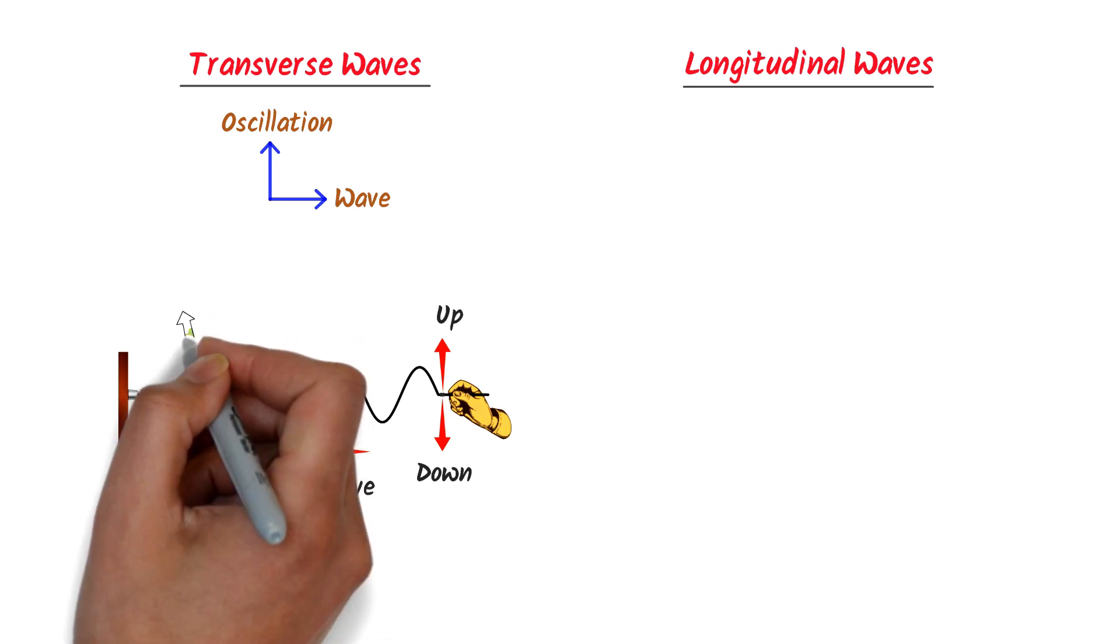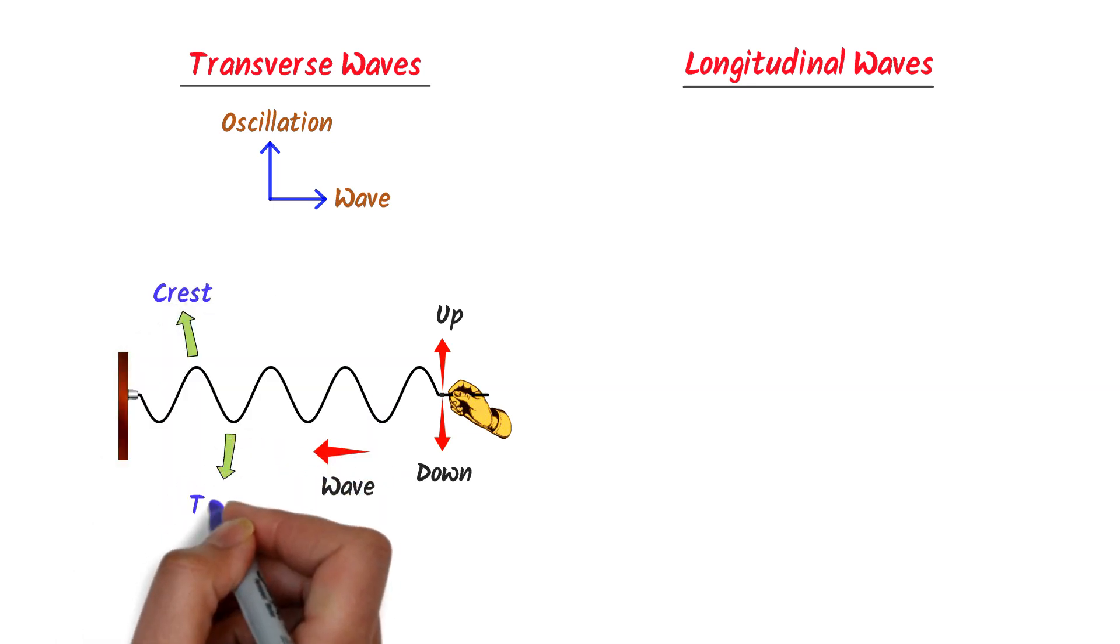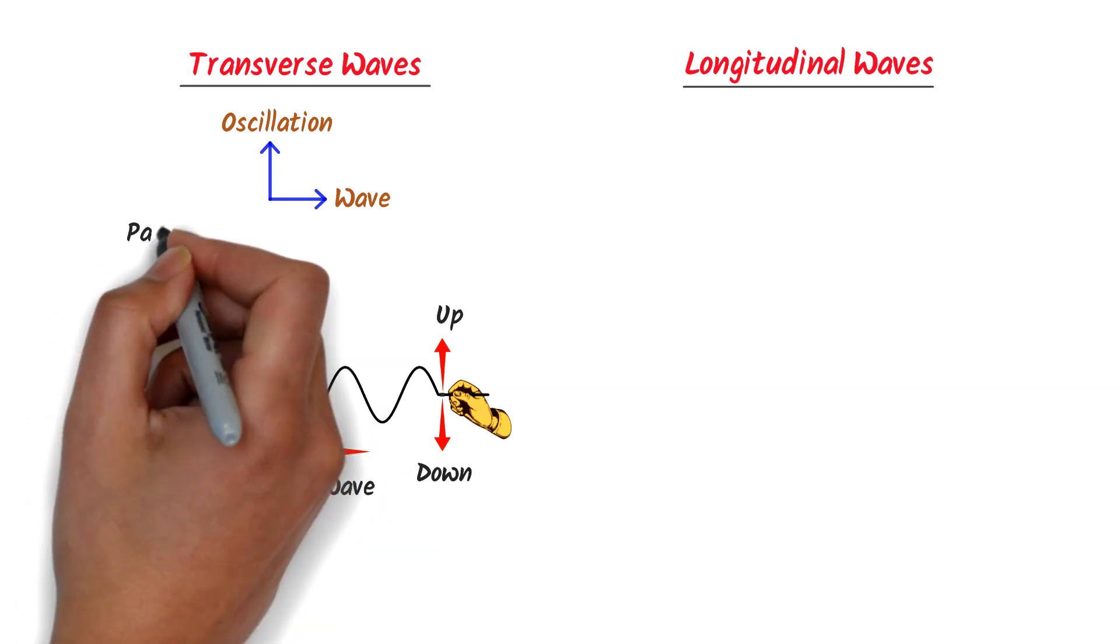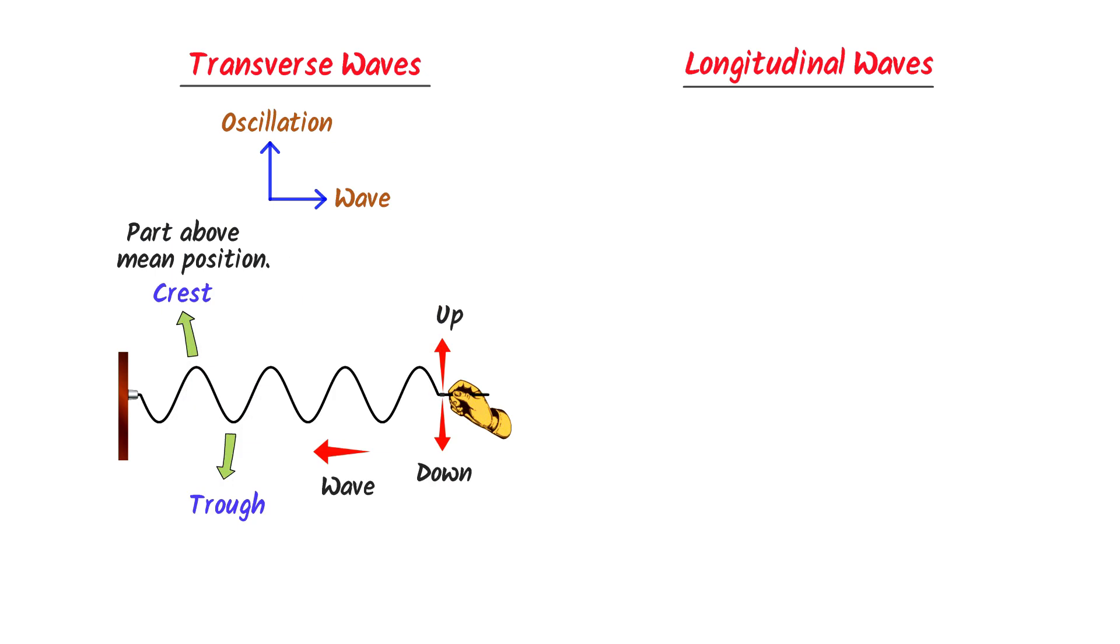Remember that every transverse wave is made up of crest and trough. Crest is the part of the wave above the mean position, and trough is the part of the wave below the mean position.